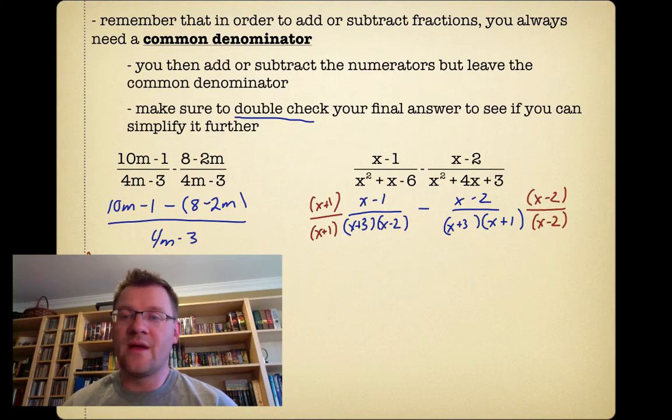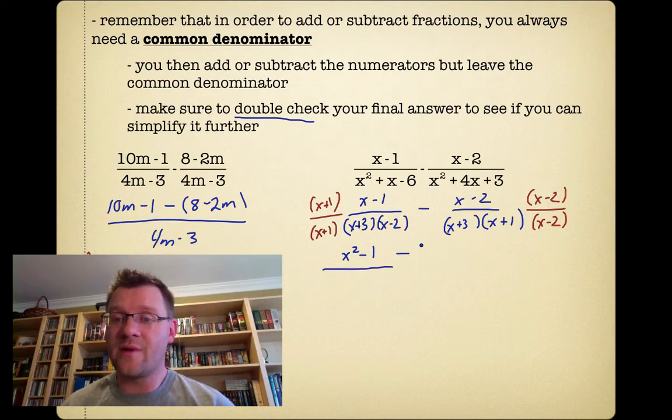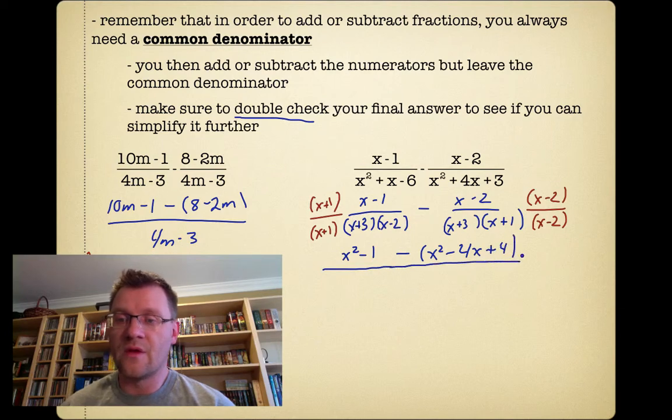Remember, by multiplying and dividing by the same thing, I'm essentially multiplying by 1. So I'm not really changing this expression whatsoever. So now I have x plus 1 and x minus 1. When I multiply those together, I get x squared minus 1. And I'm going to subtract whatever I get when I get x minus 2 multiplied by x minus 2. And that is x squared minus 4x plus 4.